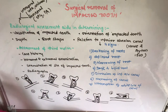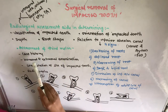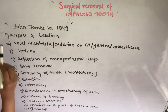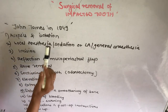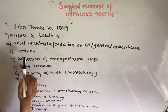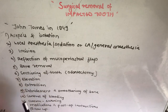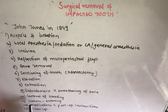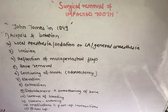Before surgical removal, you need to do an assessment of the tooth. The steps in surgical removal of an impacted tooth are: asepsis and isolation, local anesthesia, incision, reflection of a mucoperiosteal flap, bone removal, sectioning of the tooth, elevation, extraction, debridement, hemostasis, suturing, post-operative instructions and medication, and finally follow-up.